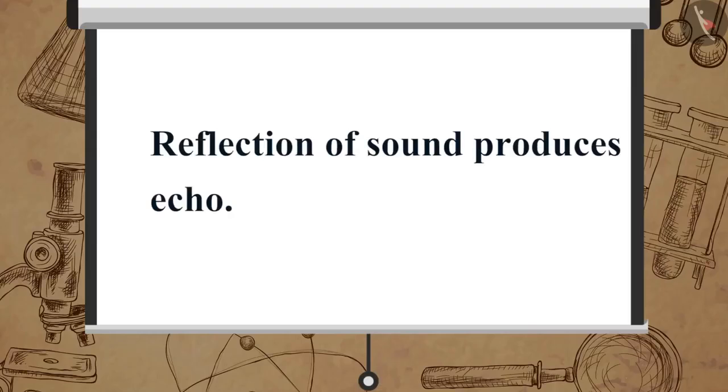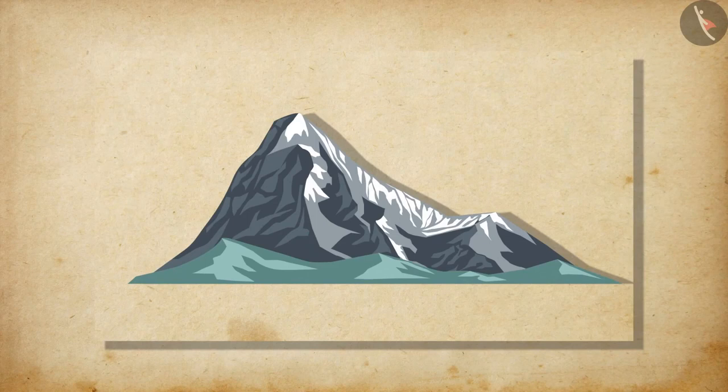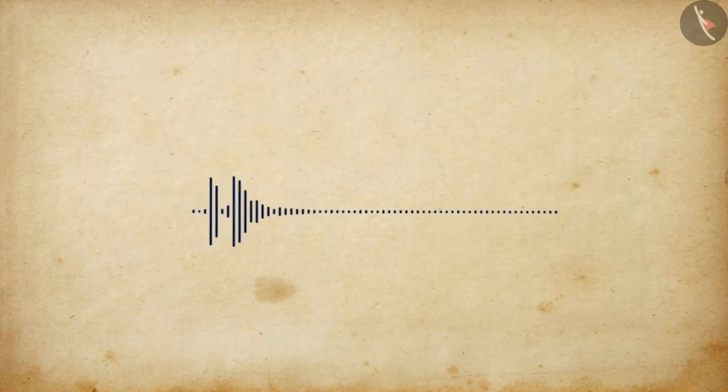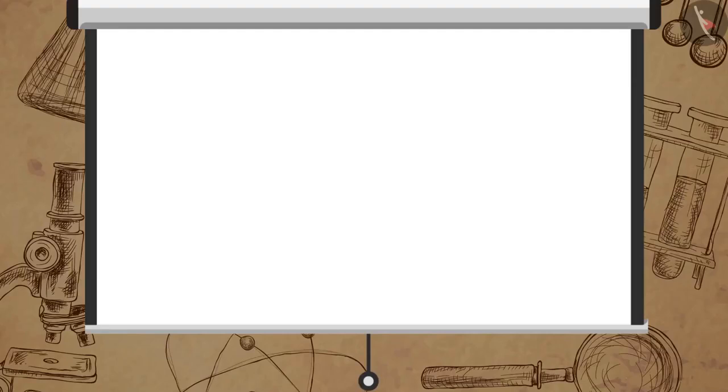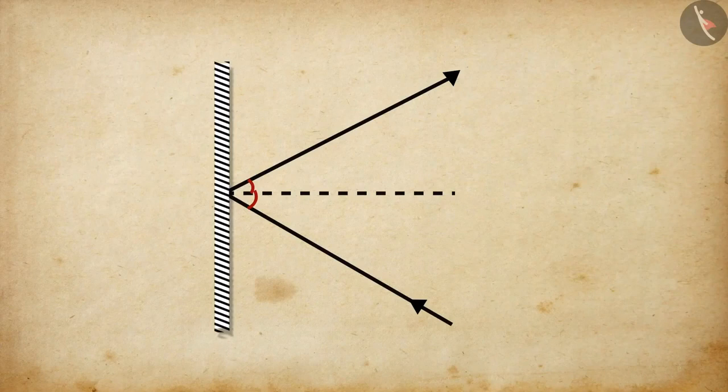Now, let us learn how reflection of sound produces echo. When you clap your hands near a reflecting surface like a mountain, you will get to hear the same sound a little later. This sound which we hear is called an echo. Why do you think echo occurs? The echo takes place as the sound is reflected back after hitting a reflecting surface.